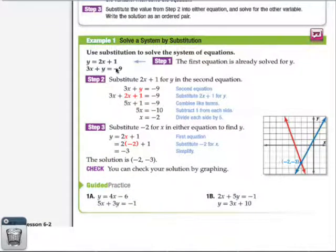Here we have y = 2x + 1 and 3x + y = -9. We can see that Step 1 is already done for us because y = 2x + 1 is already solved for y.